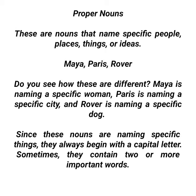With common nouns we don't know specifically what is being referred to — like 'a woman' with no name. But with proper nouns, we have the specific name of that common noun. For example: the common noun 'woman' becomes the proper noun 'Maya'; the common noun 'city' becomes 'Paris'; and the common noun 'dog' becomes 'Rover'.